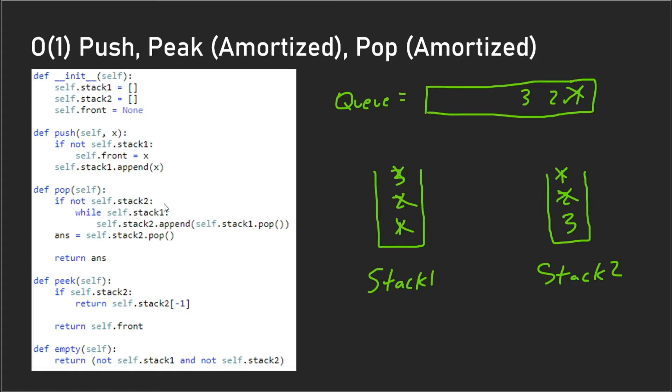So for the pop, we would first check to see if there are items in stack two, and if there are then we just pop the element off of stack two. And if it isn't, we go through our original algorithm where we're popping every single element in stack one until stack two is populated.